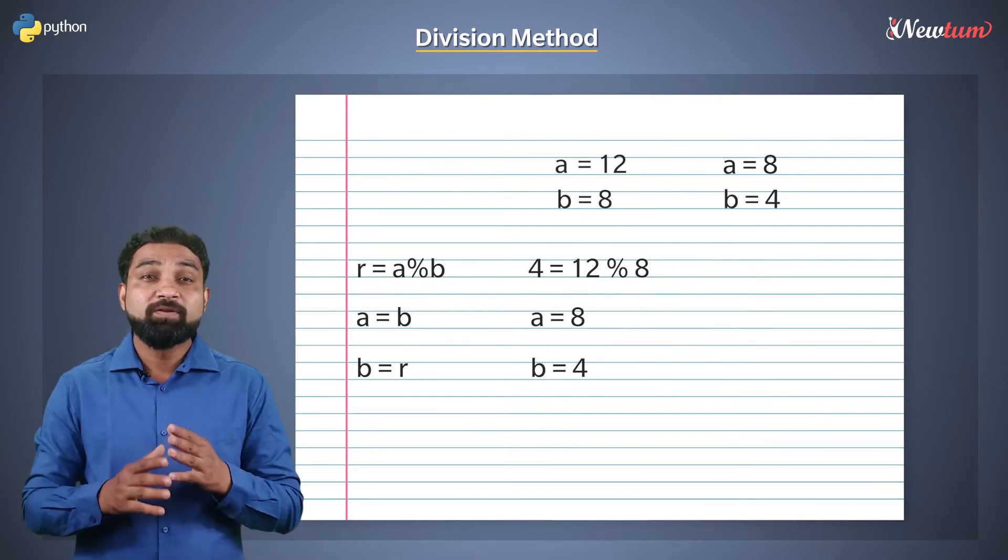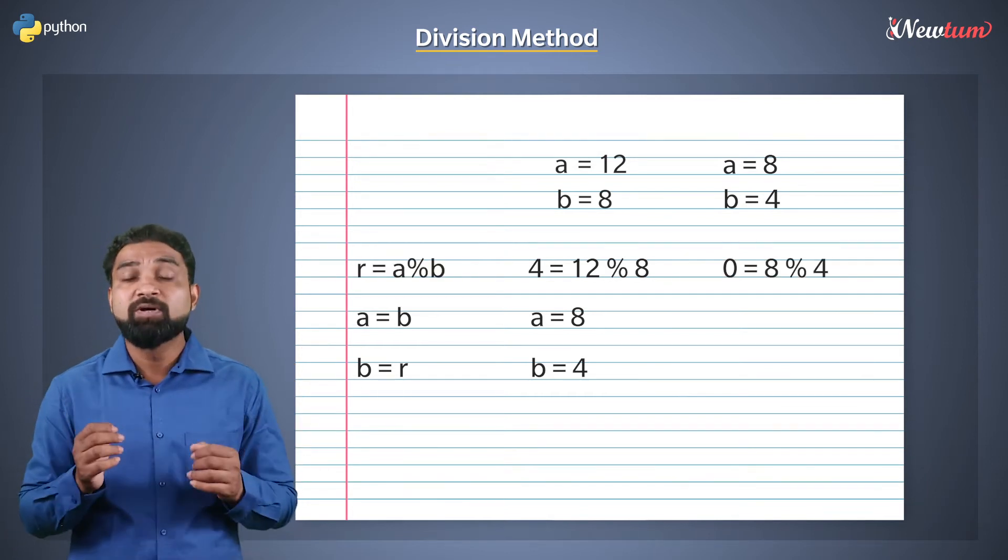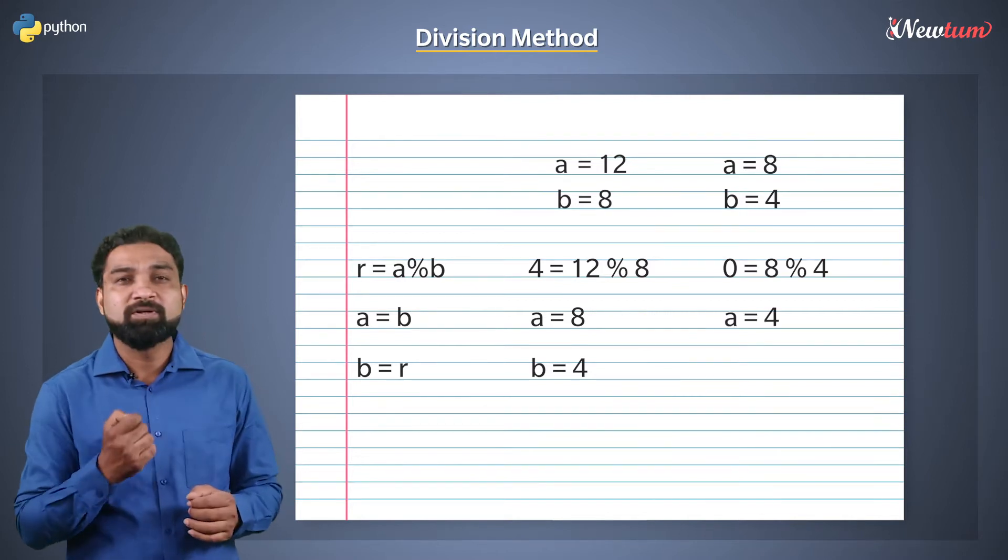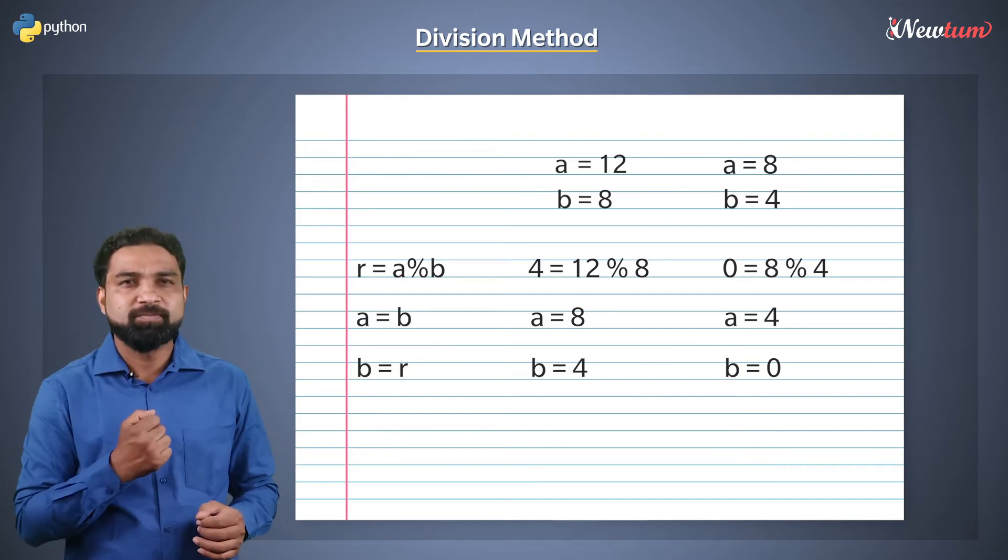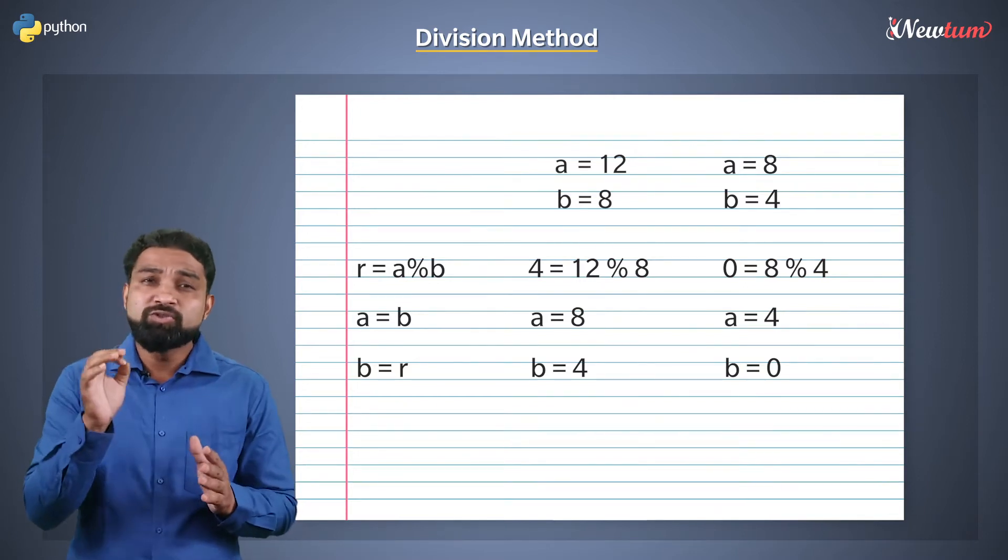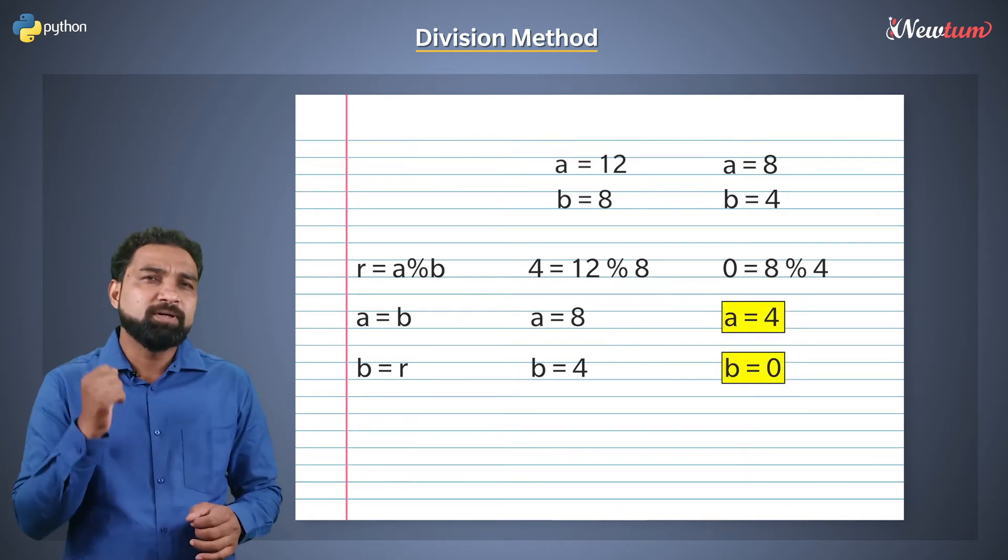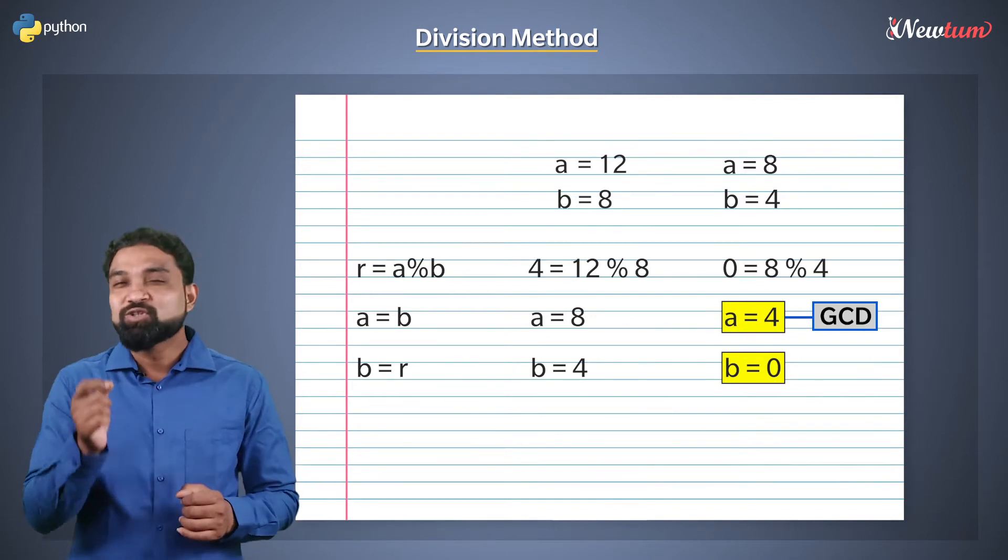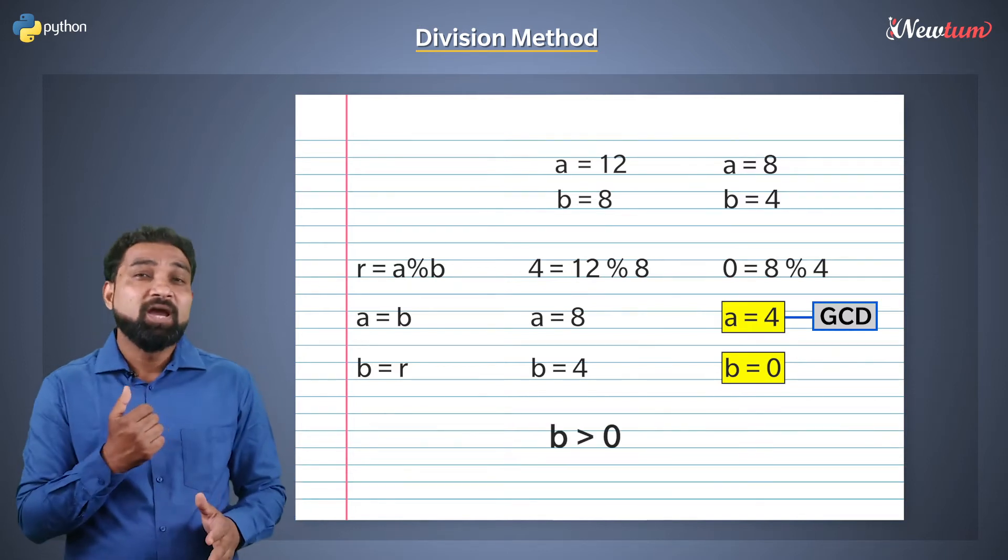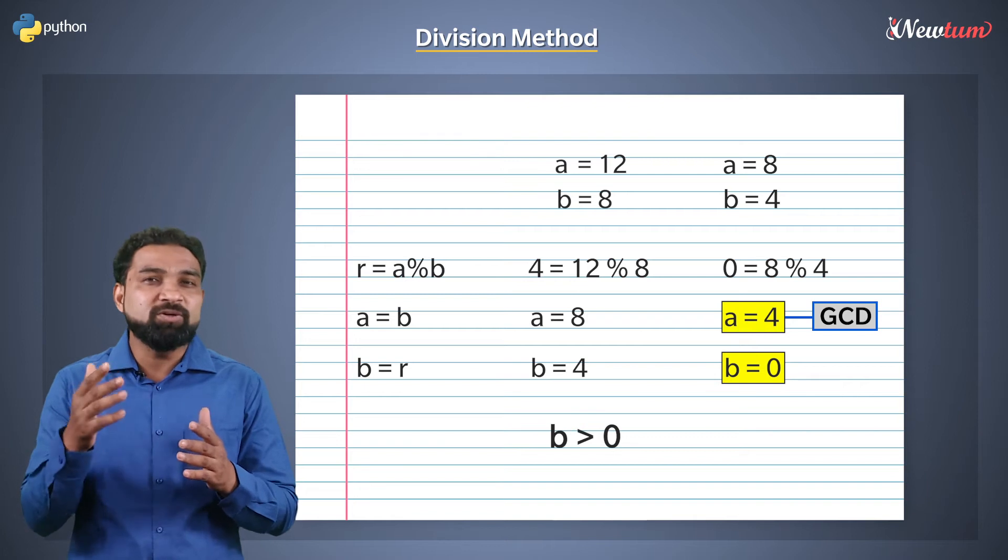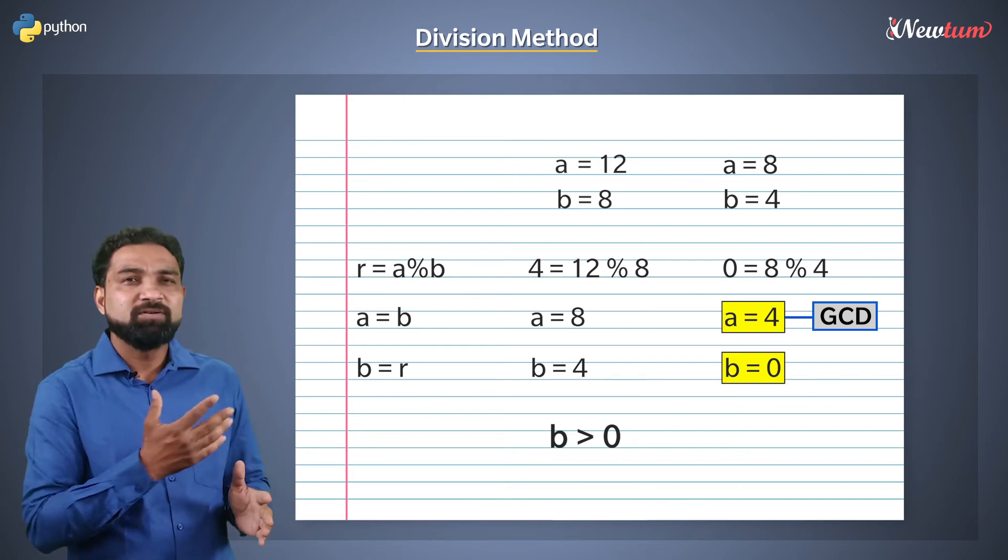When we repeat this operation and divide a by b, we will get remainder 0. The value of a will become 4 and r becomes 0, so b becomes 0. Now we stop the operation. You see, the value of a becomes 4 and b becomes 0, but 4 is nothing but our GCD. So we need to write a loop which will continue till b is greater than 0. As soon as b reaches 0, a is our GCD. If you are confused, don't worry - all the confusion will clear out after writing our program.